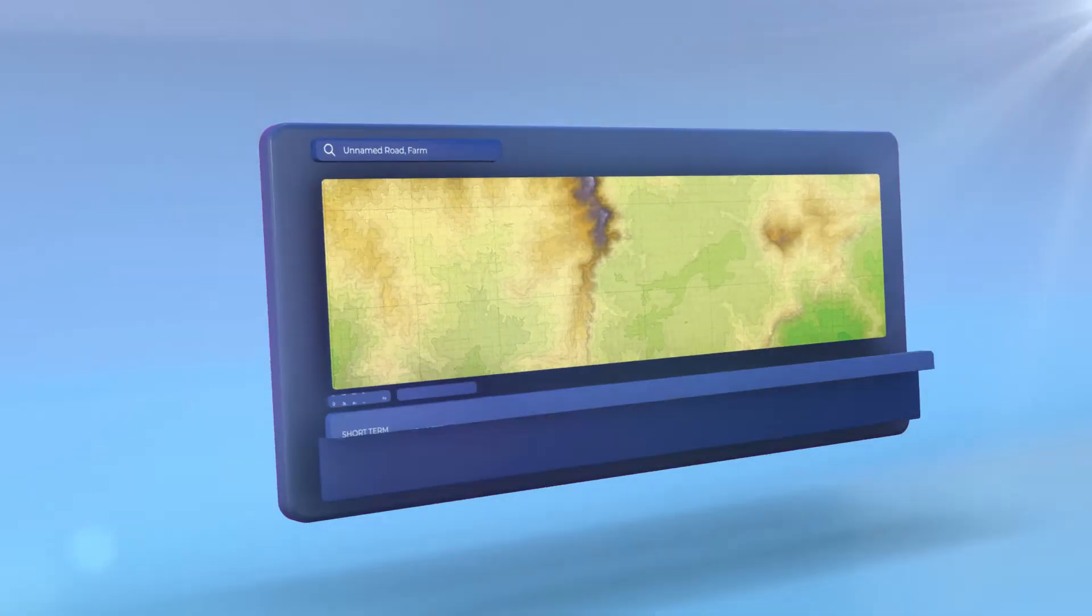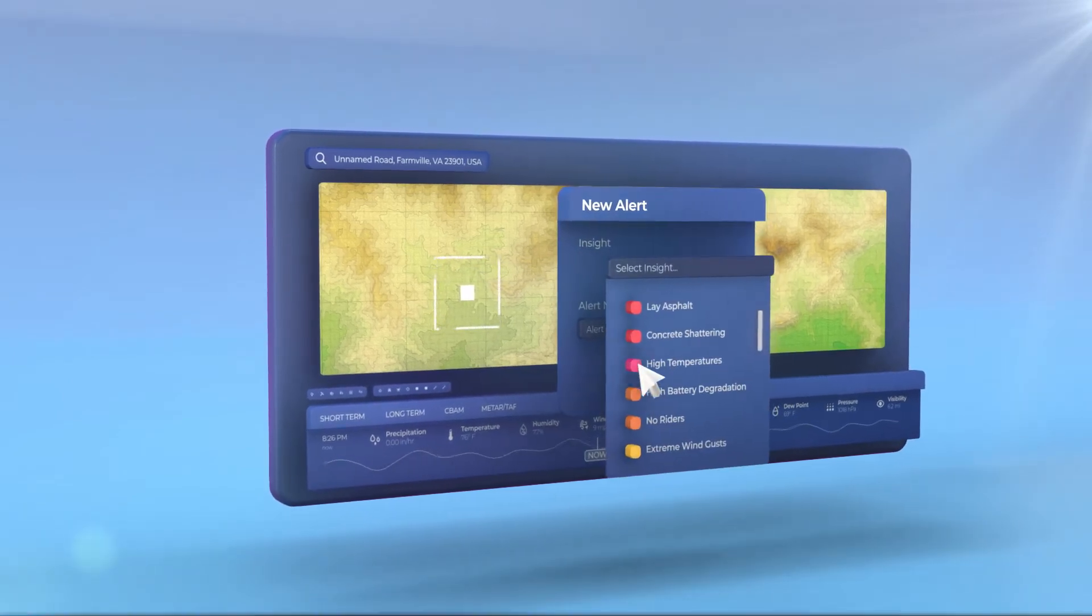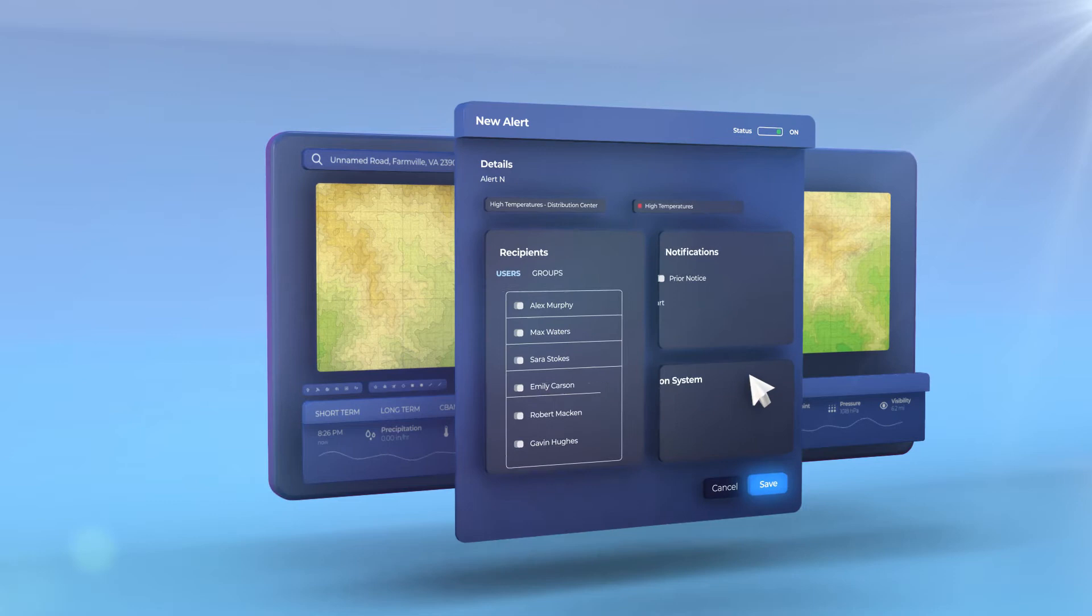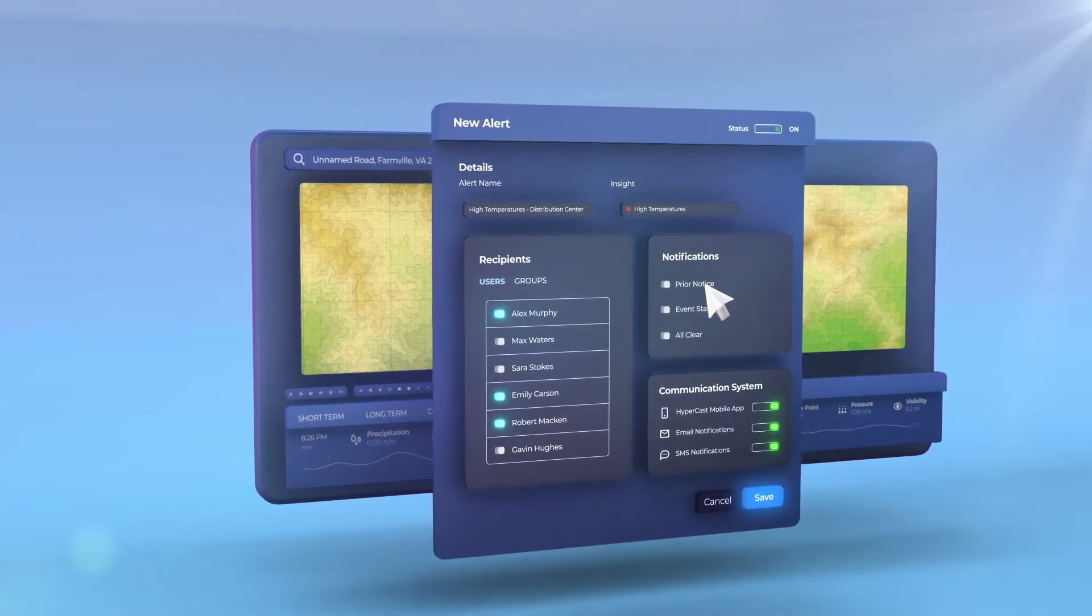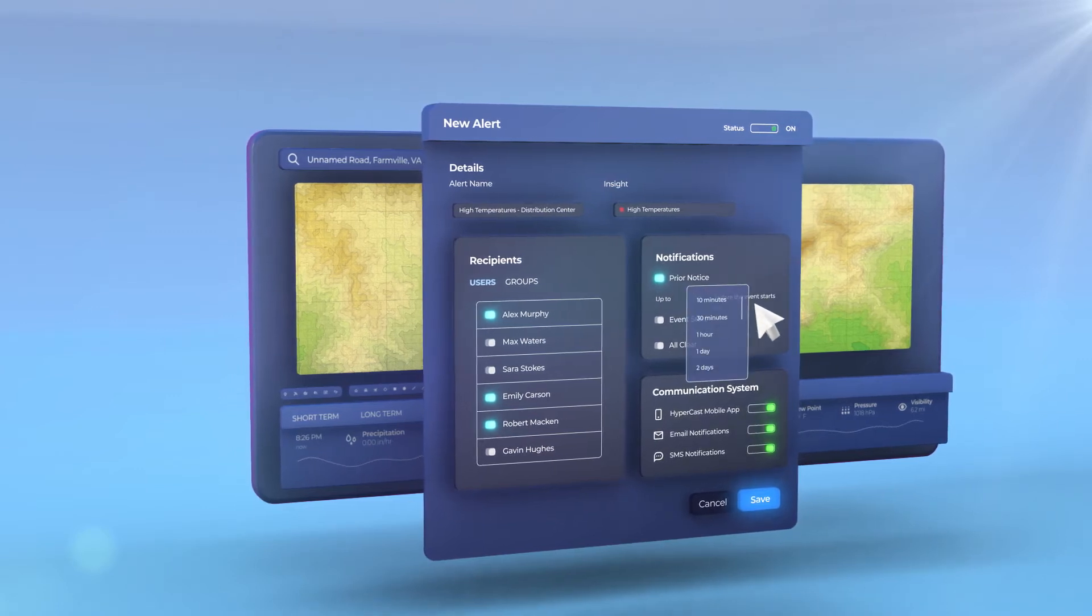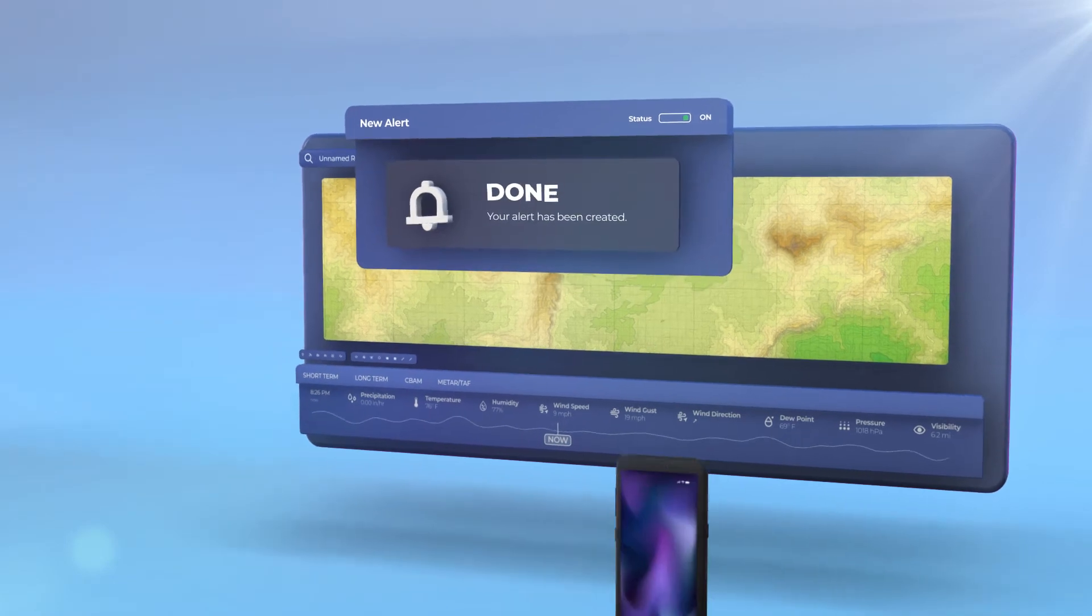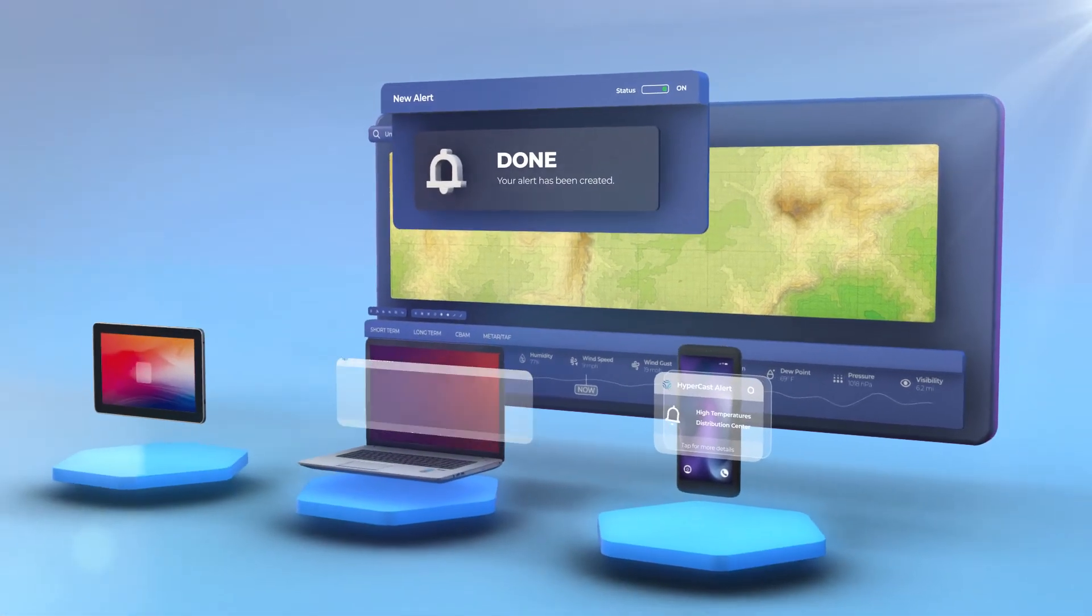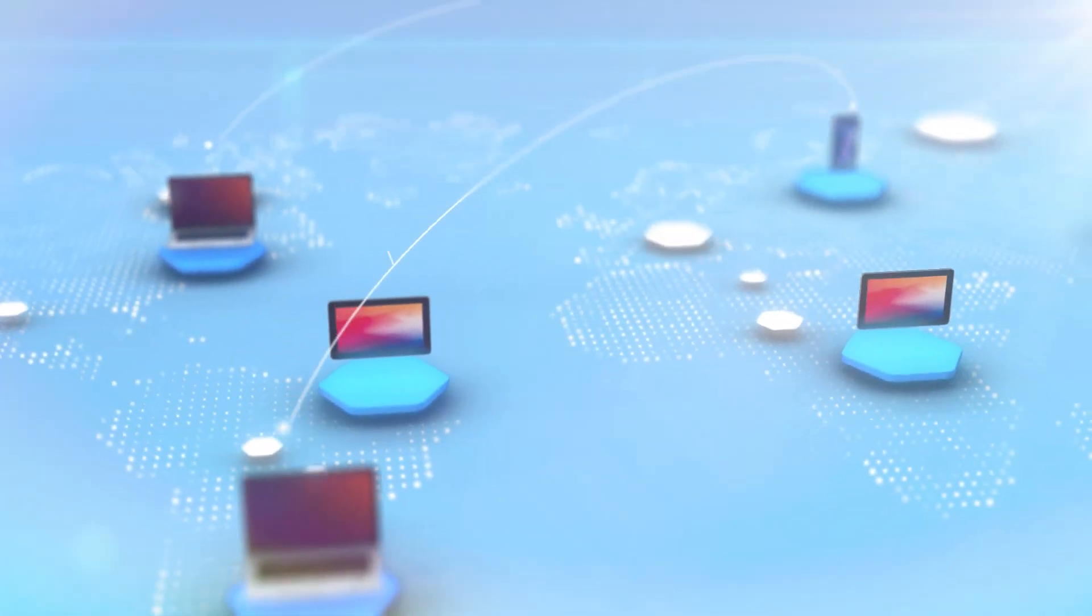Finally, to ensure a single source of weather truth, Tomorrow.io's monitoring and alerting capabilities streamline team communication and action plans. You can assign specific people to dashboards and jobs and customize alerts to be sent out days, hours, or minutes in advance of weather impact. Alerts can be sent via text message, email, or whichever communication system you're using. Everything is automated for consistent information across your organization.